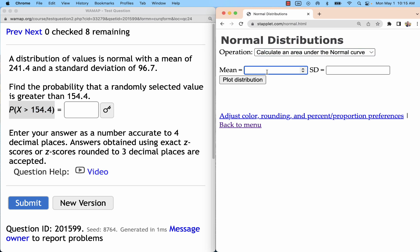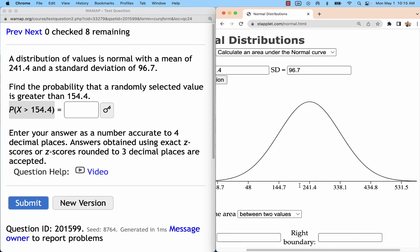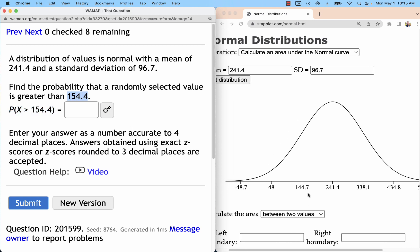Start by entering the mean and standard deviation that's given. Plot the distribution, and you can see that labeled x-axis, and if we think about our value of 154.4, we can find where that is.